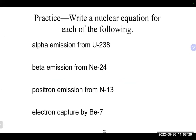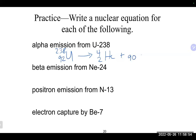For uranium-238, the mass number is 238 and the atomic number from the periodic table is 92. It's an alpha emission, so the alpha particle (helium-4) goes on the product side. Focusing on the atomic number: 92 minus 2 gives 90, which is thorium (Th). For the mass number: 238 minus 4 gives 234. So the product is thorium-234.